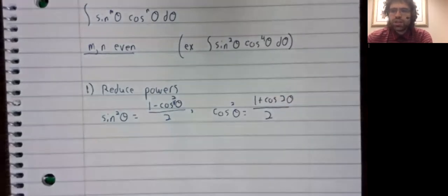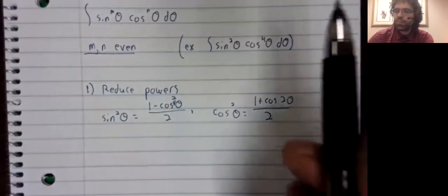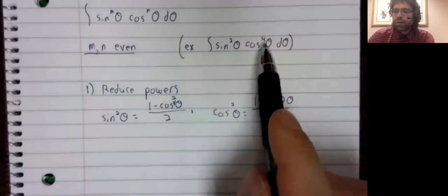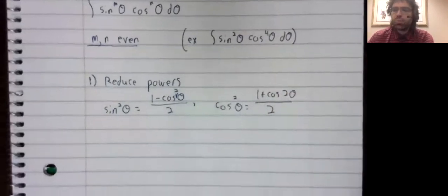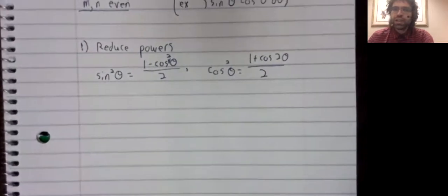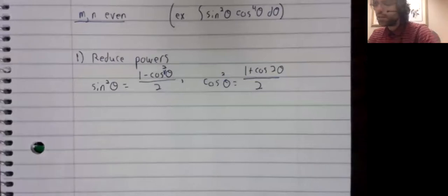And just as in the previous case, where you rewrote something as a square raised to a power, if our powers are both even, they can both be rewritten as a square to a power.